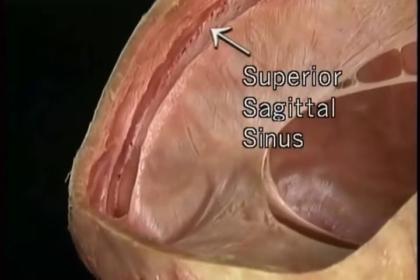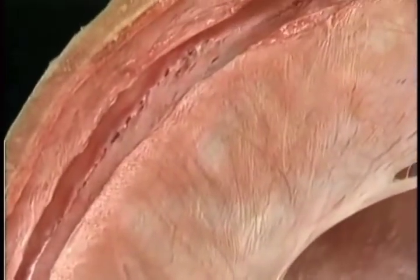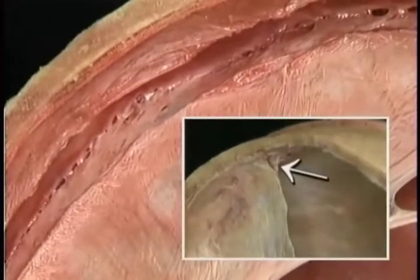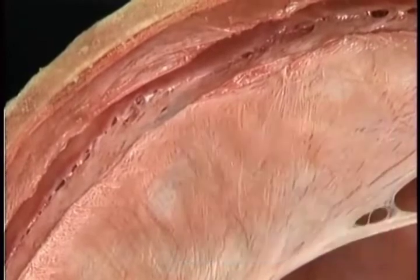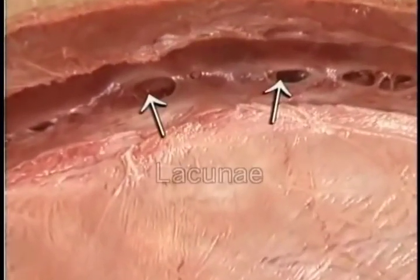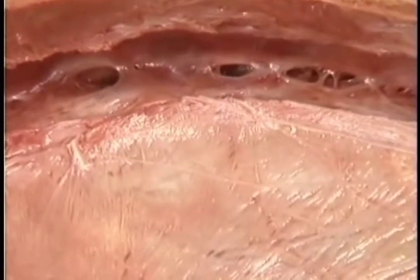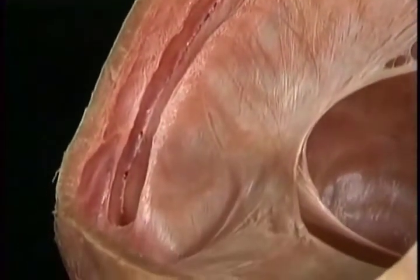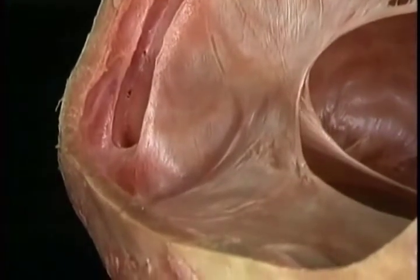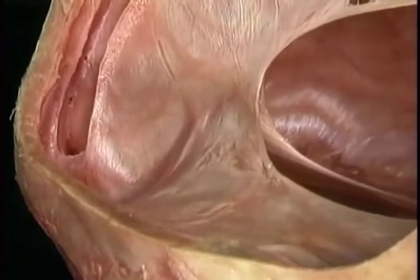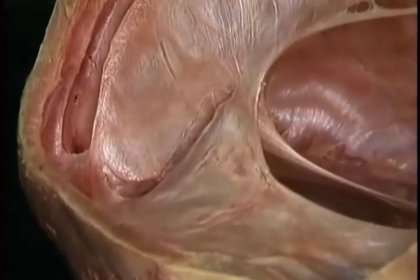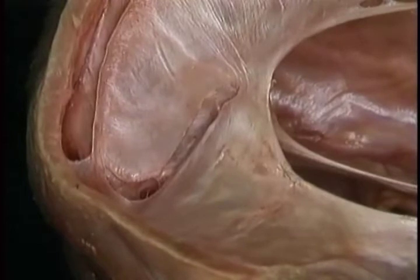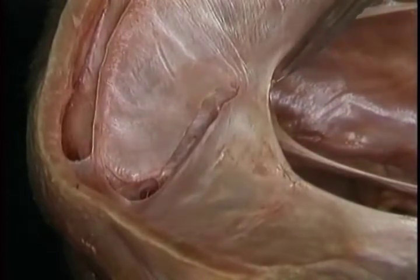We've removed one side of the superior sagittal sinus so that we can look into it. As we saw in a previous section, the superior sagittal sinus is contained in a triangular space enclosed on all three sides by dura. At several places, side passages called lacunae open into the sinus, and veins from the surface of the brain open into the lacunae. The superior sagittal sinus ends where the attachments of the falx and the tentorium meet. Also running toward the same point is the straight sinus, which runs along the junction between the falx and the tentorium. At its upper end, it receives the inferior sagittal sinus and also the great cerebral vein.